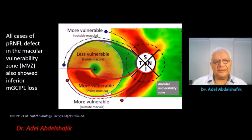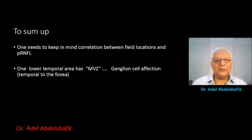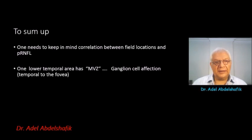Another study showed the same thing back in 2017. To sum up, one needs to keep in mind the correlation between the field locations and the peripapillary nerve fiber layer, and also the area known as the macular vulnerability zone. When it is affected around the disc, then the ganglion cells are also affected.